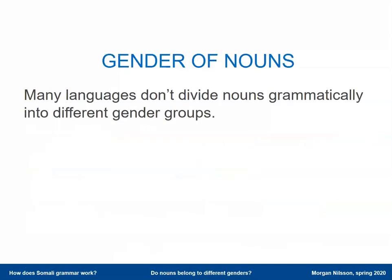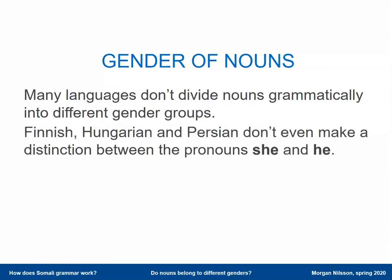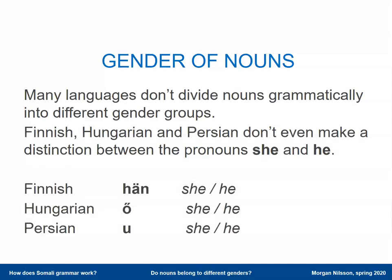But many languages don't have a gender at all. For example, Finnish, Hungarian, Persian — they don't even have different pronouns for 'she' and 'he.' They only have one pronoun. Finnish has 'hän,' and it means both 'she' and 'he' at the same time, so it can be either. Hungarian has 'ő,' Persian has 'u.'